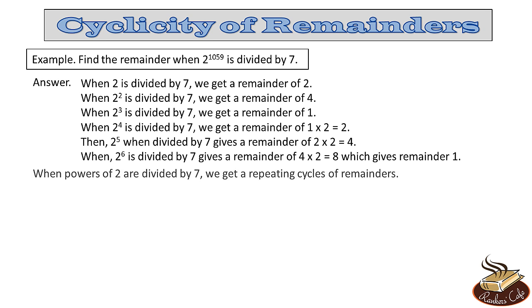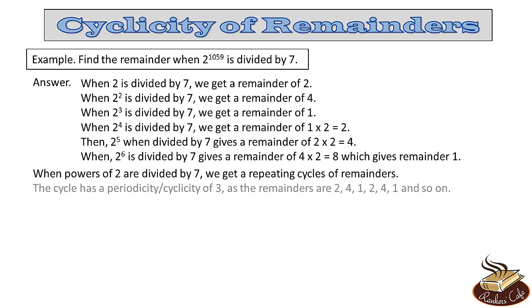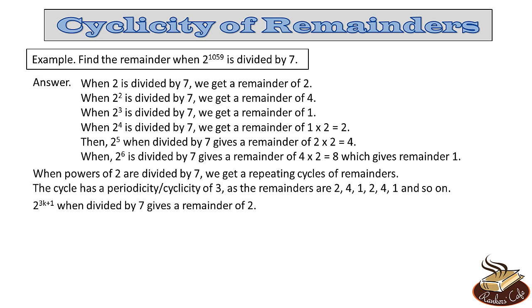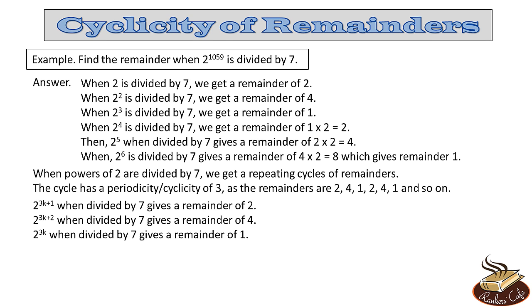So we can see that when powers of 2 are divided by 7, we get a repeating cycle of remainders. The cycle is 2, 4, 1, 2, 4, 1, and so on. So the cycle has a periodicity or cyclicity of 3. Therefore, 2 raised to the power 3k+1 when divided by 7 gives a remainder of 2; 2 raised to the power 3k+2 gives a remainder of 4; and 2 raised to the power 3k when divided by 7 gives a remainder of 1.